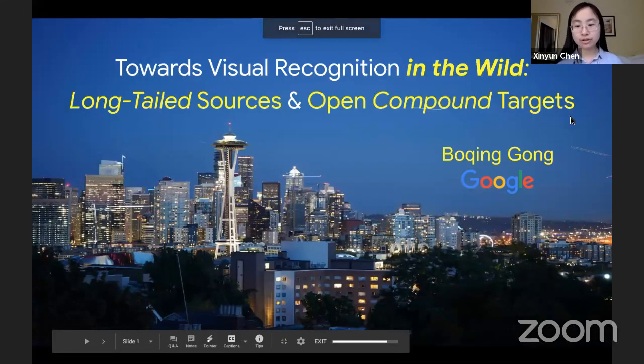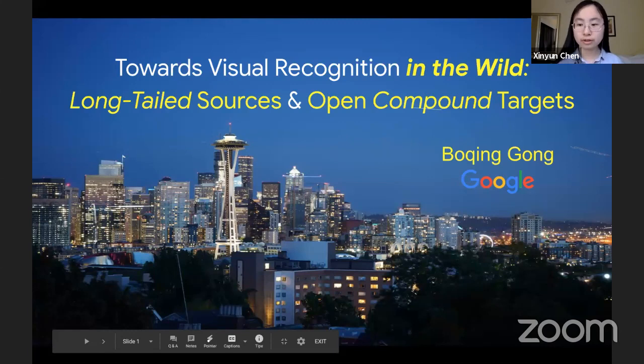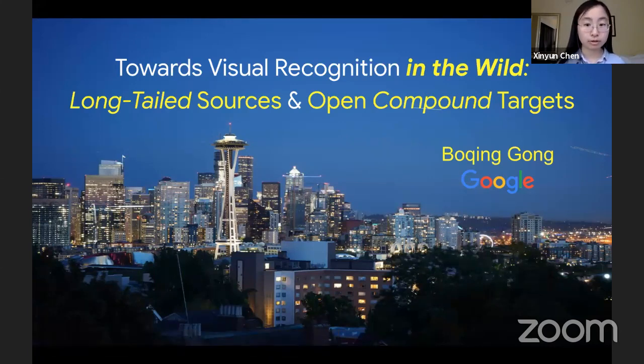So he's a research scientist at Google Seattle and a remote principal investigator at ICSI Berkeley. His research in machine learning and computer vision focuses on modeling algorithms and visual recognition. Before joining Google in 2019, he worked in Tencent and was a tenure-track assistant professor at the University of Central Florida. He received his PhD in 2015 at the University of Southern California.